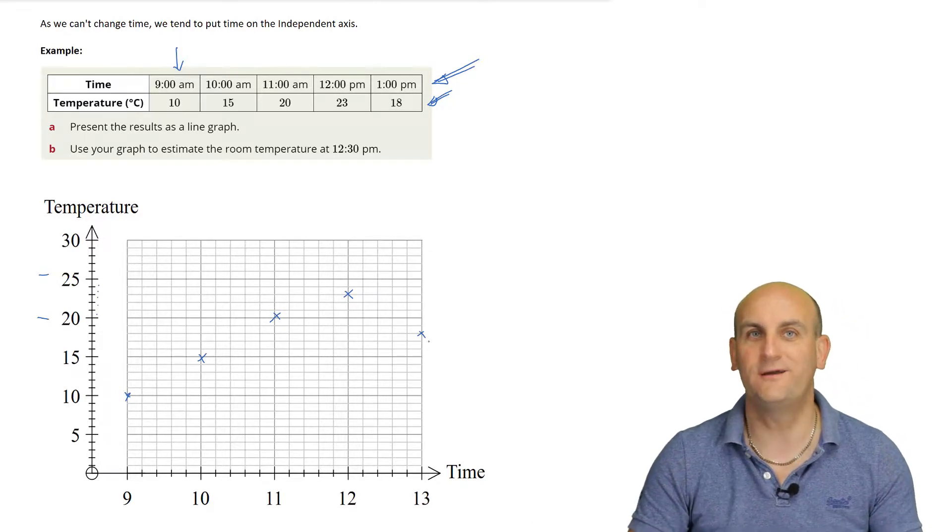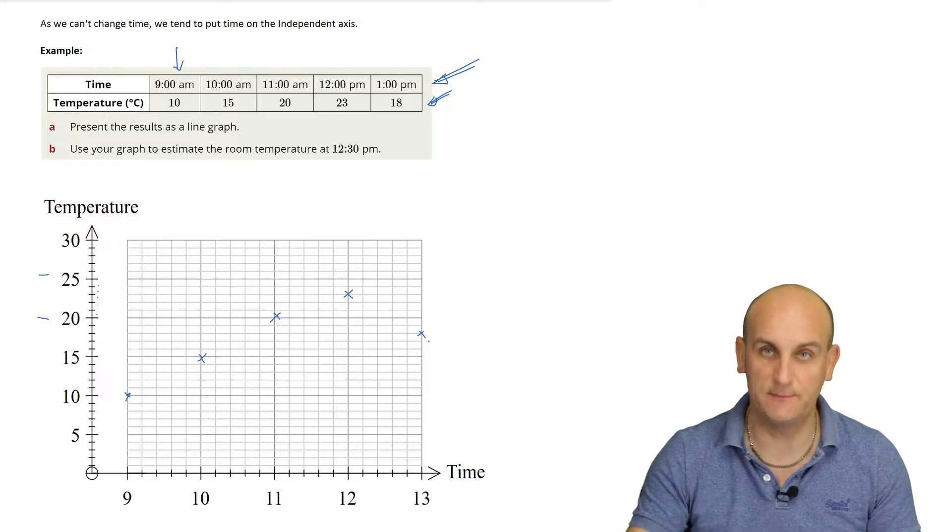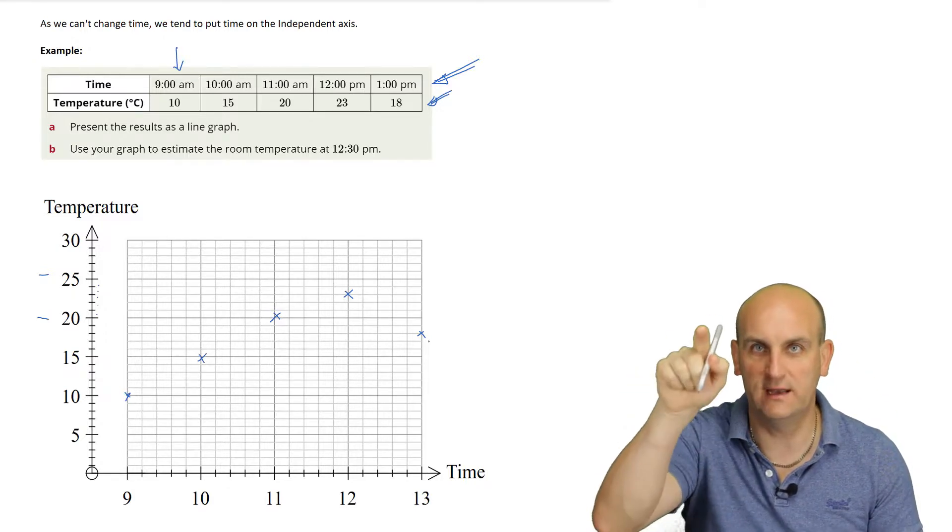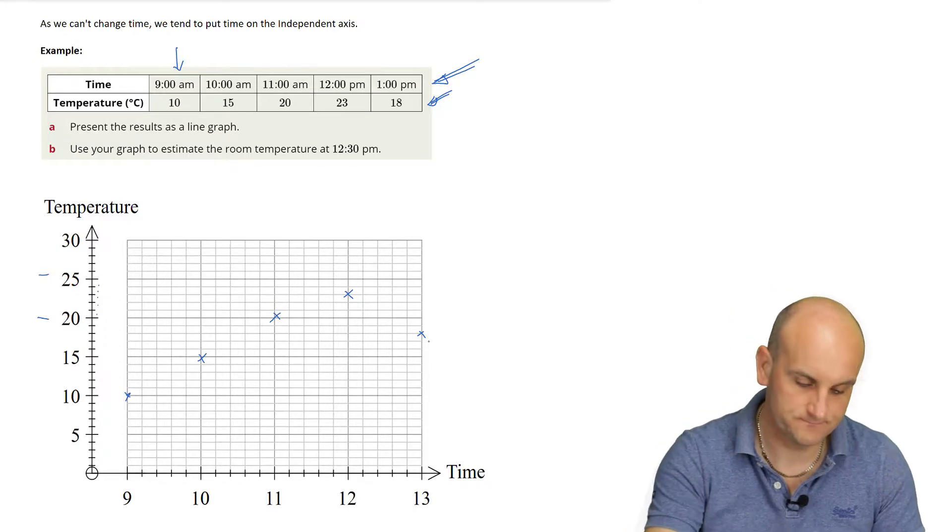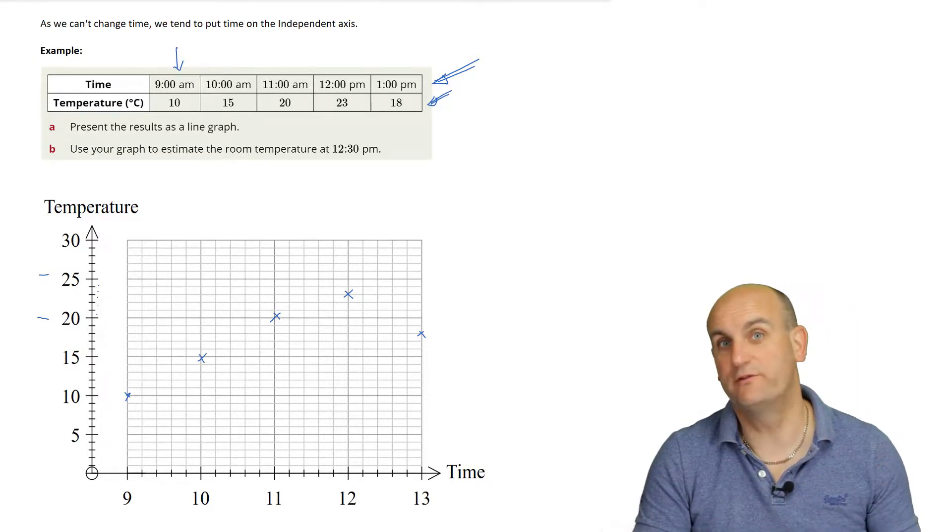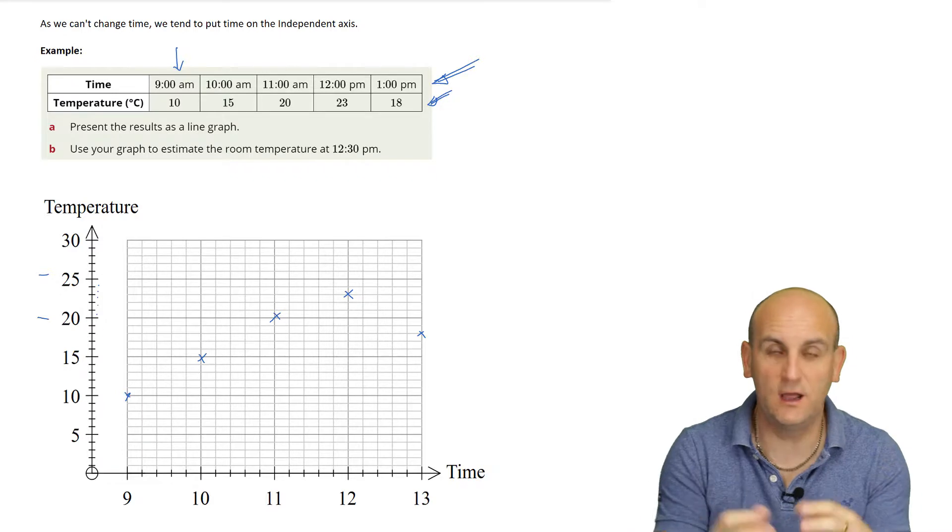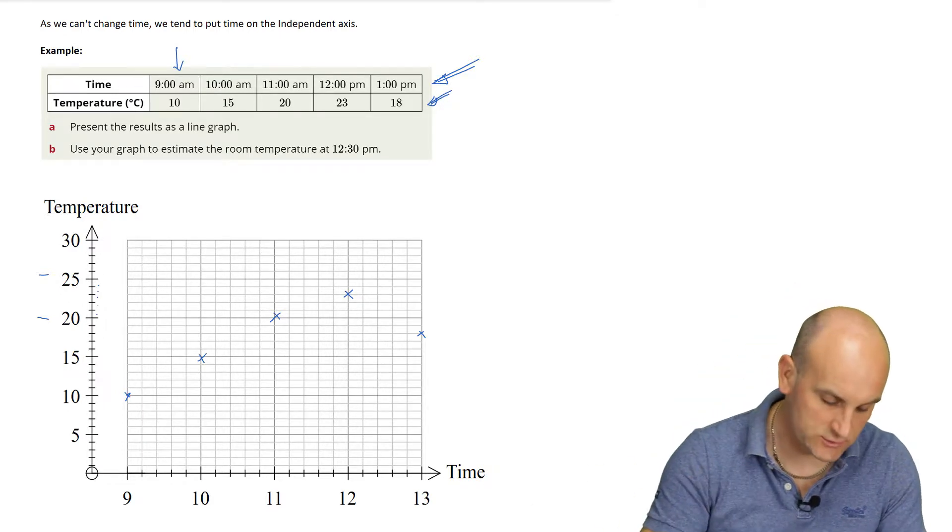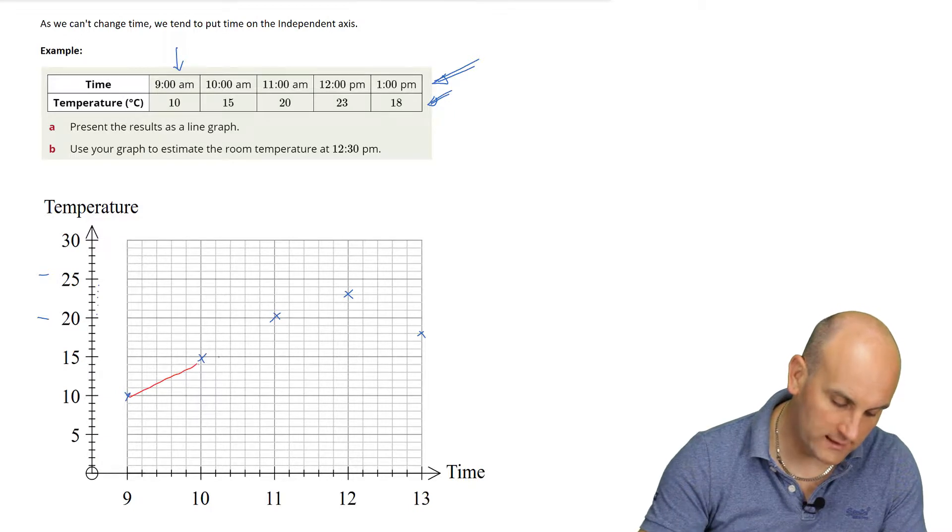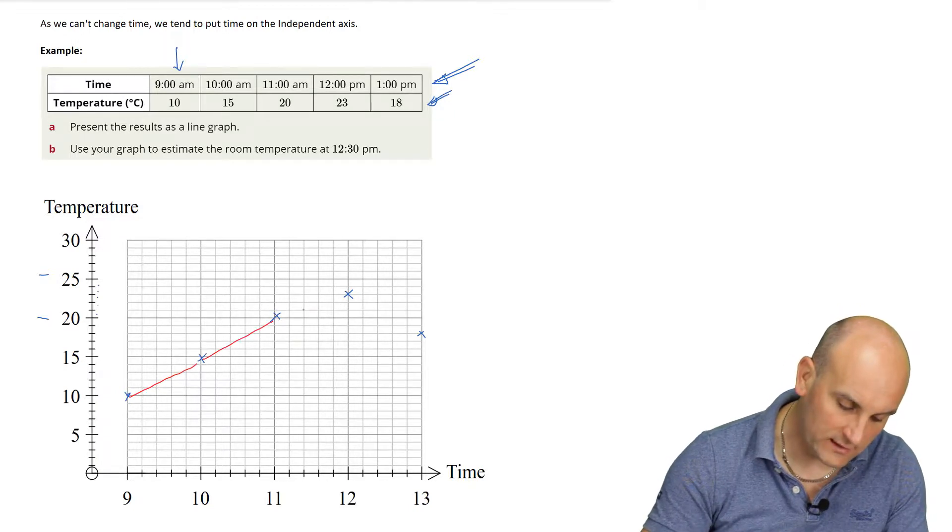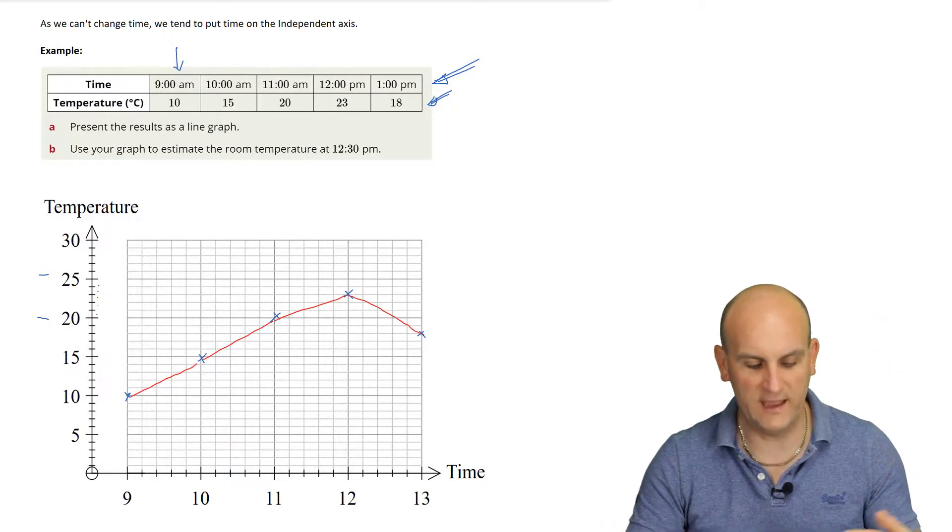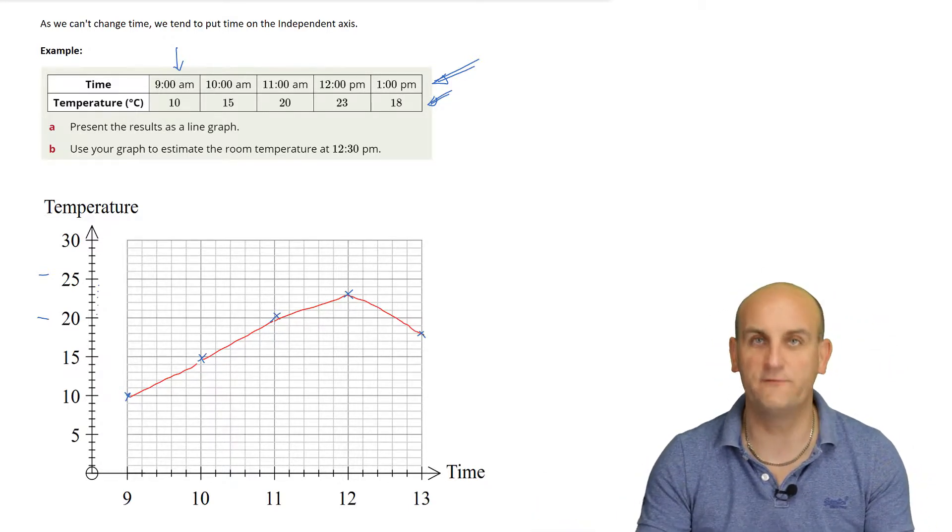Now, what do I do? Well, because I know that it's continuous data. Temperature goes up and down and up and down. It's got all the points in between. I now connect those crosses together. Now, I'm going to change colour to make it easier for you to see. You don't actually have to do that. On your graph, you can just continue in pencil and join them all together. Drawing nice straight lines between each of those points. And lo and behold, there is my line graph. Very exciting.